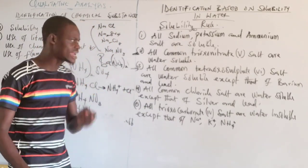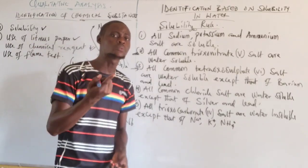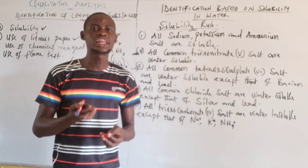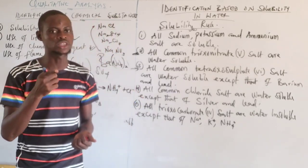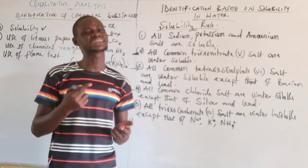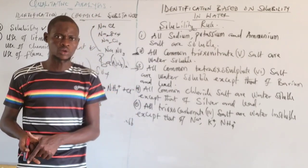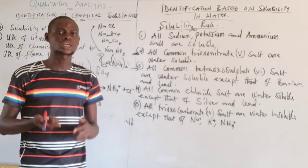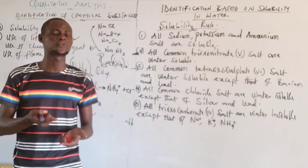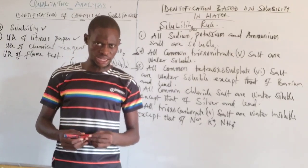Now, rule three: all common tetraoxosulfate(VI) salts — that is sulfate salts — are water-soluble, except those of barium and lead. Barium sulfate and lead sulfate are insoluble in water. But other sulfates like sodium sulfate, ammonium sulfate, and potassium sulfate are all soluble in water.